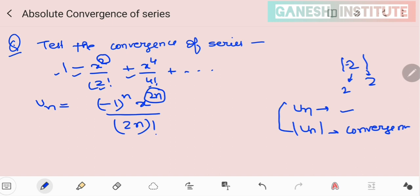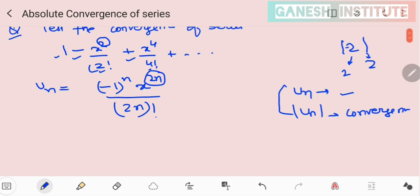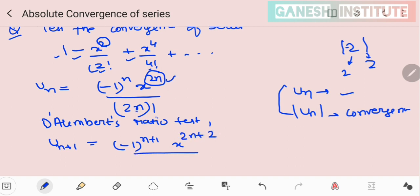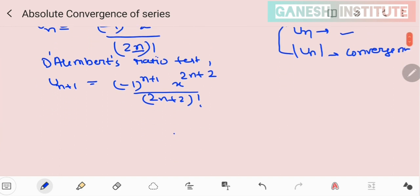If you want to find out the convergence, apply any of the tests which suit this condition. Let's say, D'Alembert's ratio test again. We have been using it many times. For D'Alembert's ratio test, you need to find out the next term, u_n+1. That means minus 1 raised to power n+1, x raised to power 2n+2, over 2n+2 factorial. So this is your u_n+1.